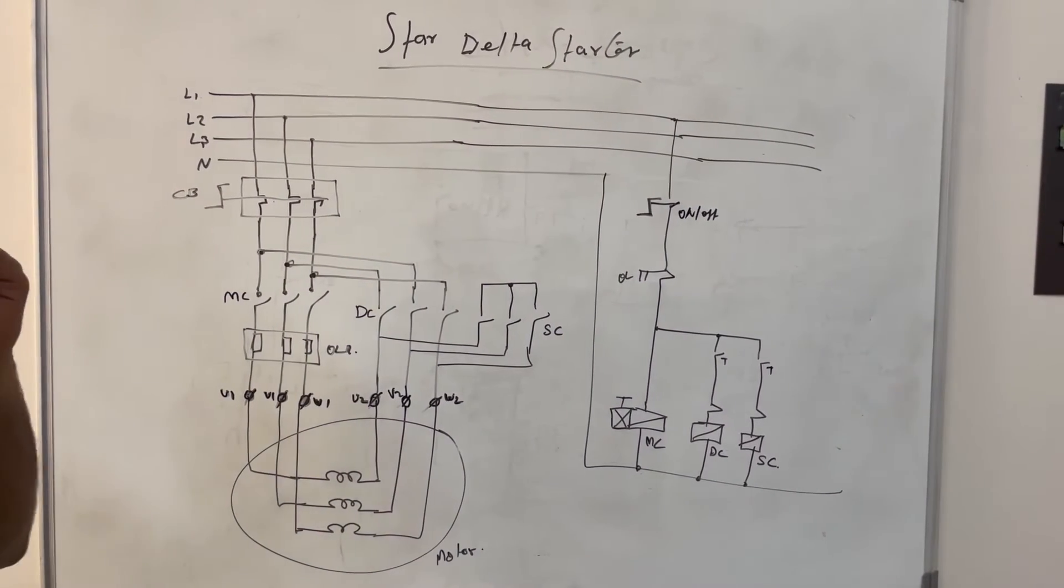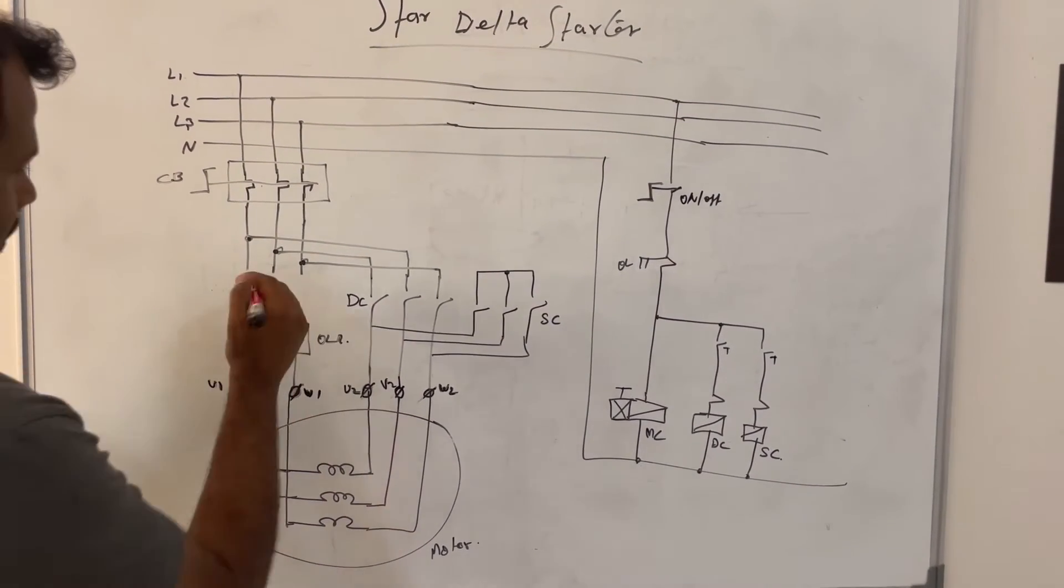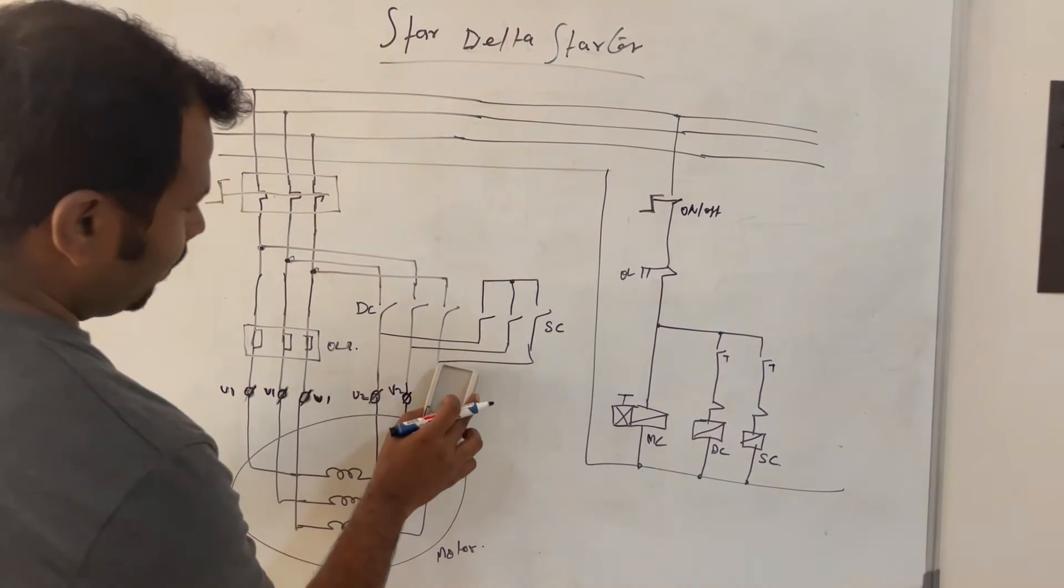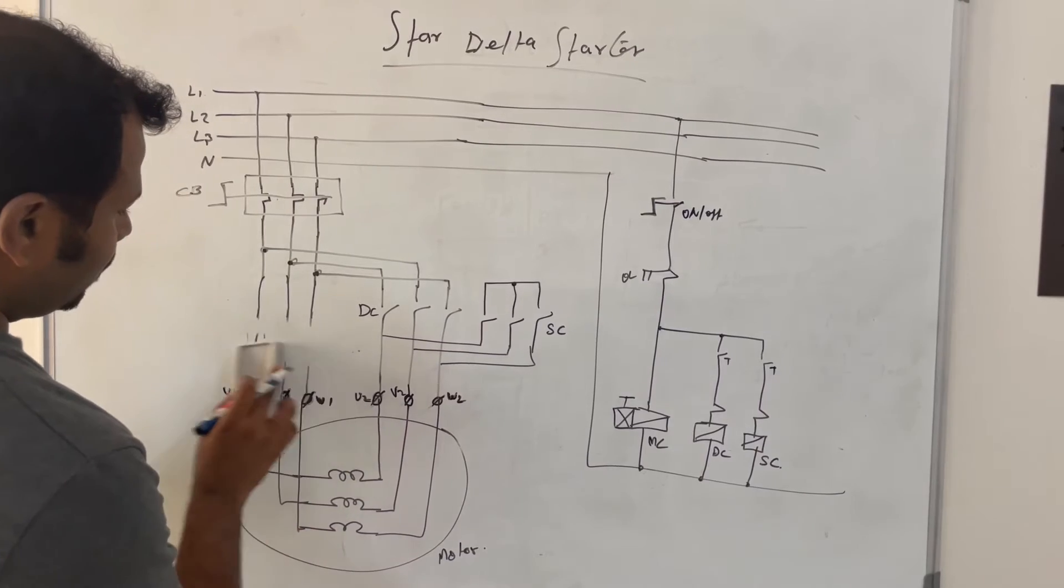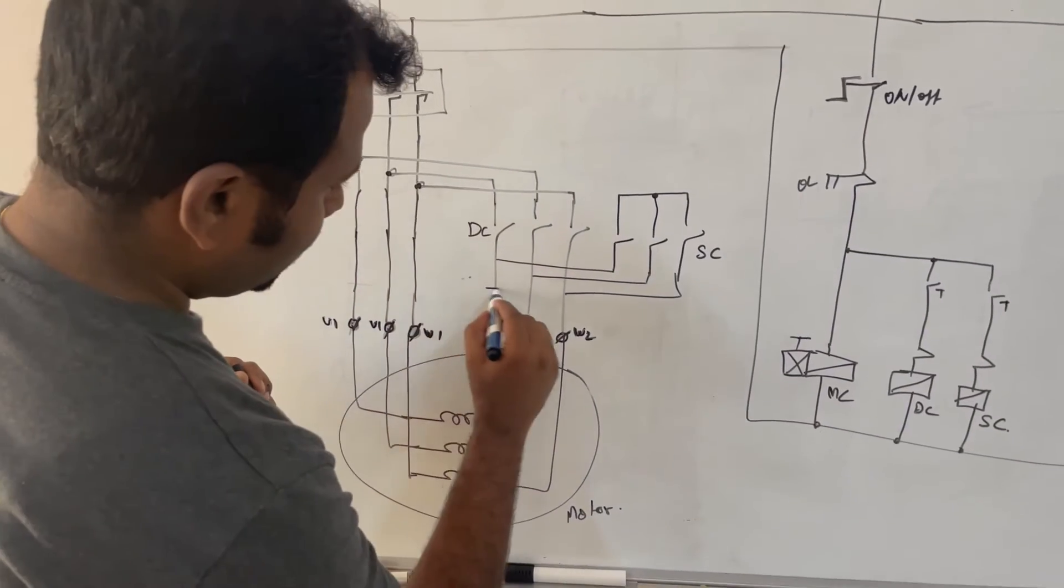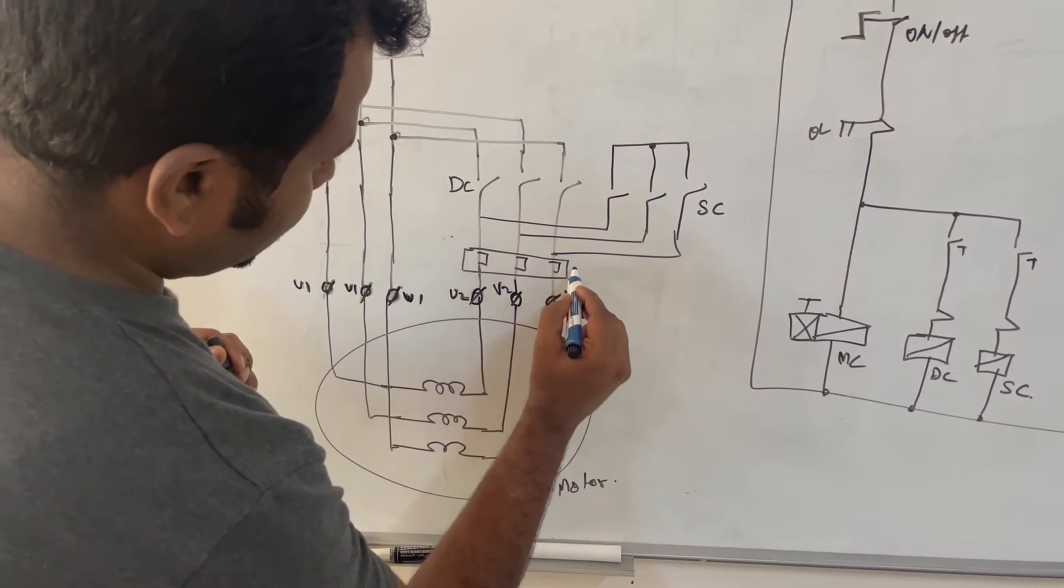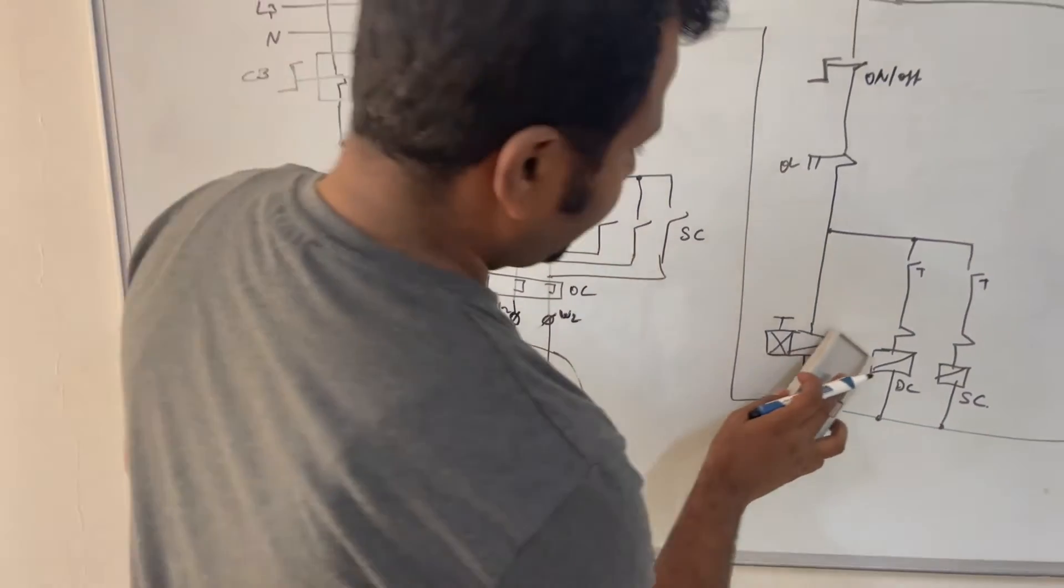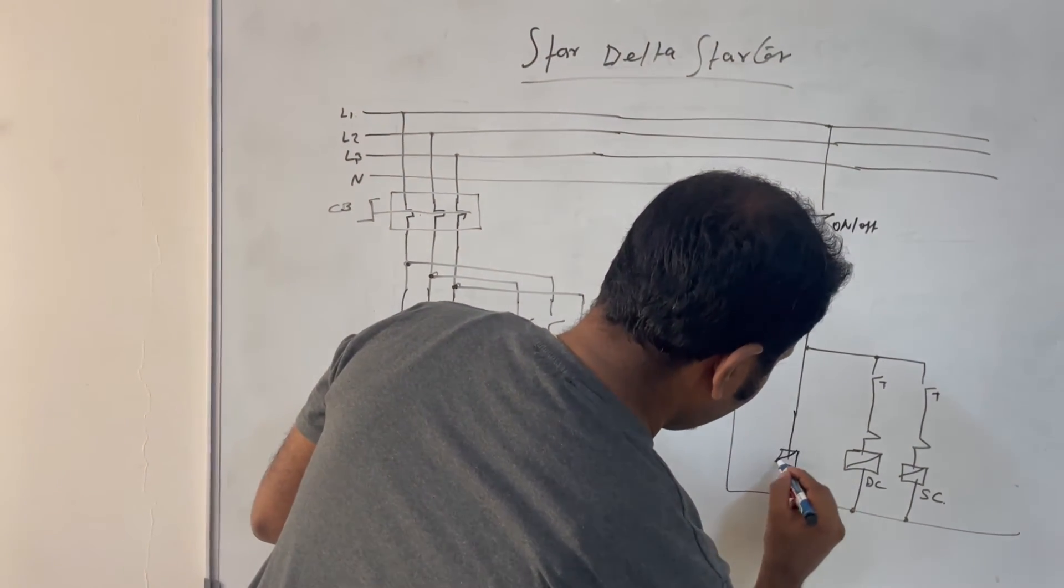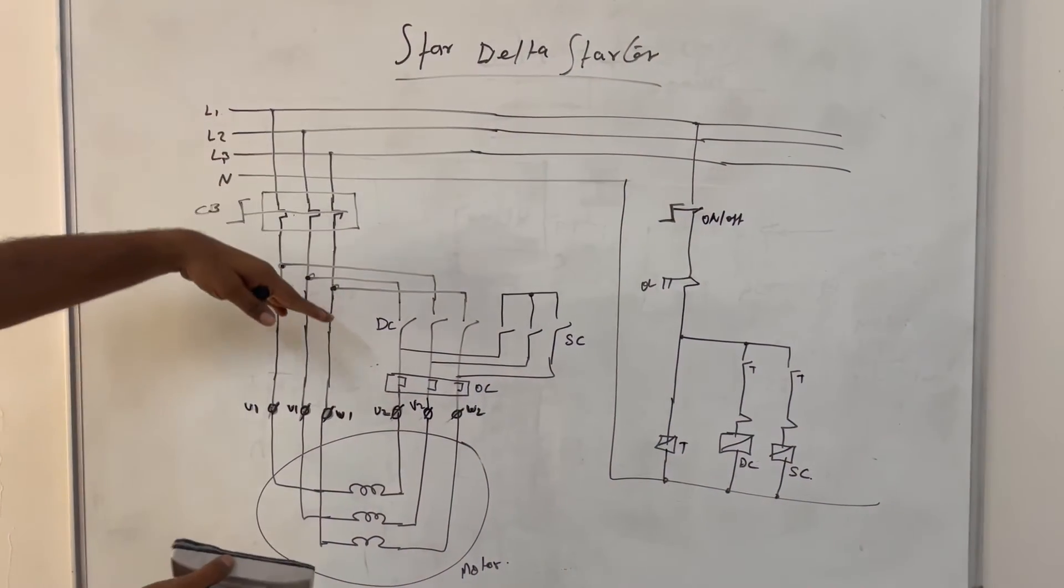So in this case what we will do, we will delete this main contactor. You can only delete this main contactor. Now this star delta starter is now only made with two contactors.